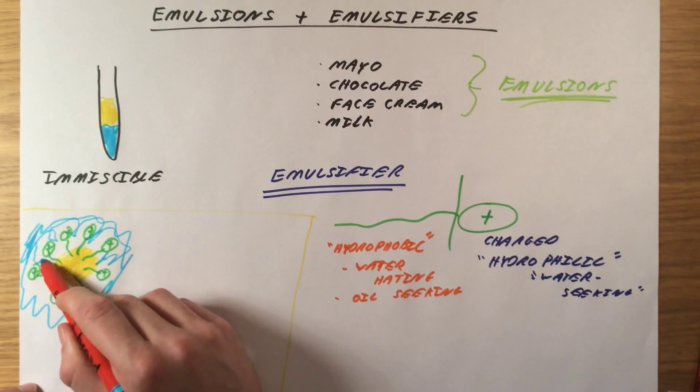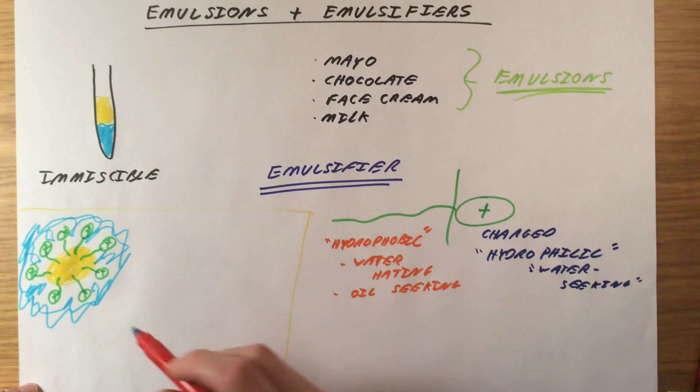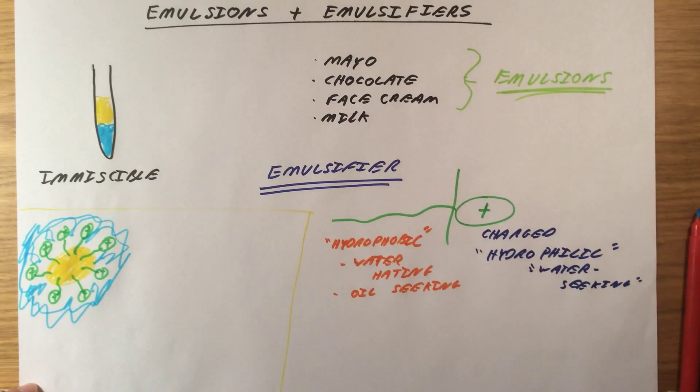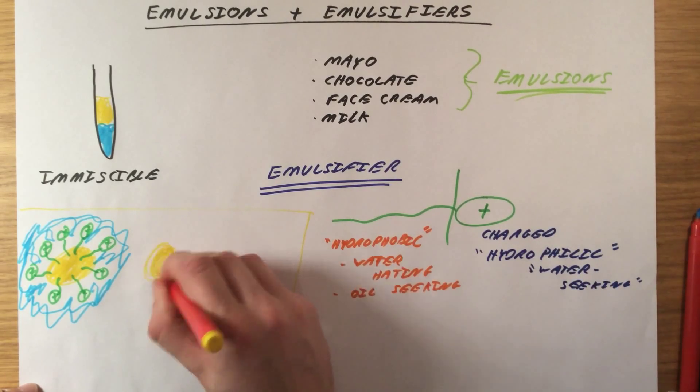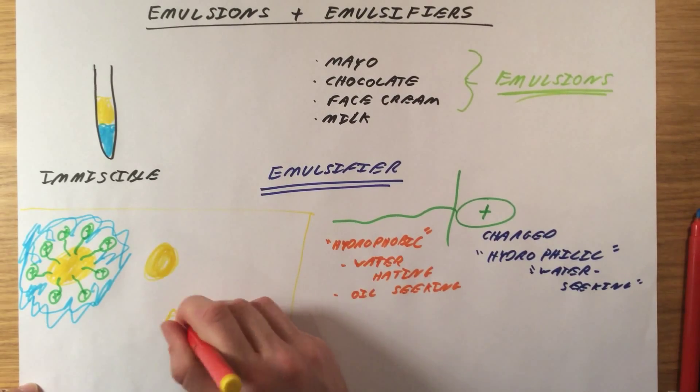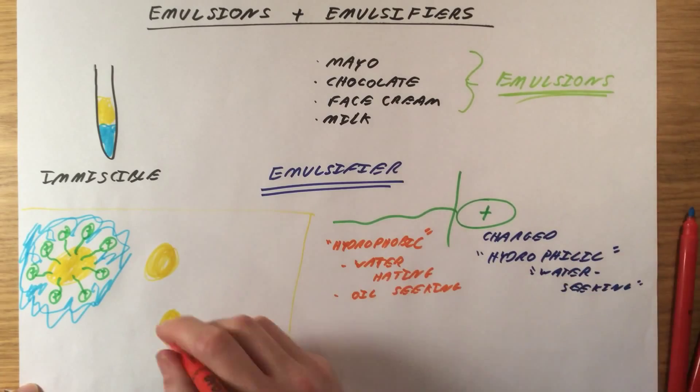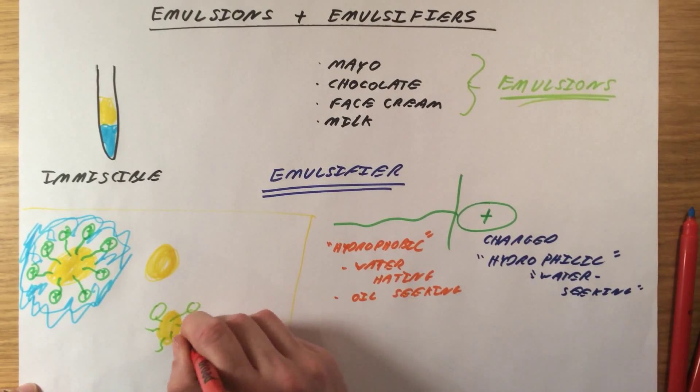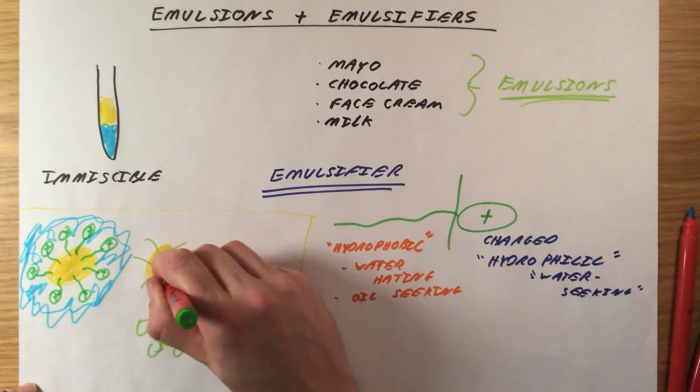Since all of these hydrophilic heads have a positive charge, they're going to repel every other droplet of oil. So now in your water, you'll have lots of little droplets of oil which have been separated by these emulsifier molecules.